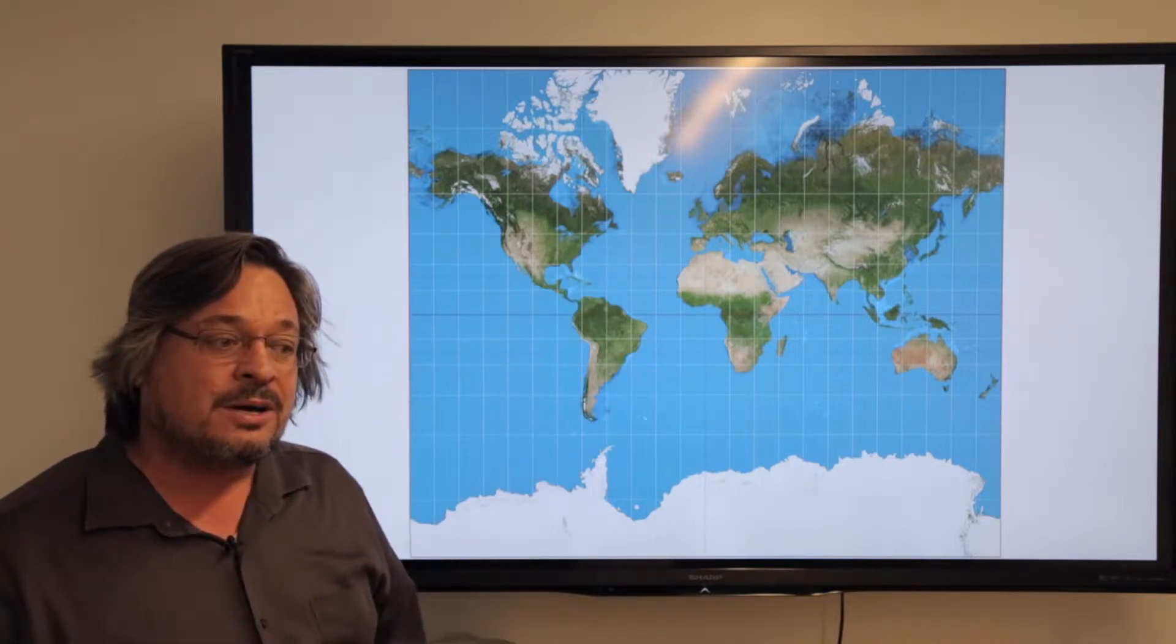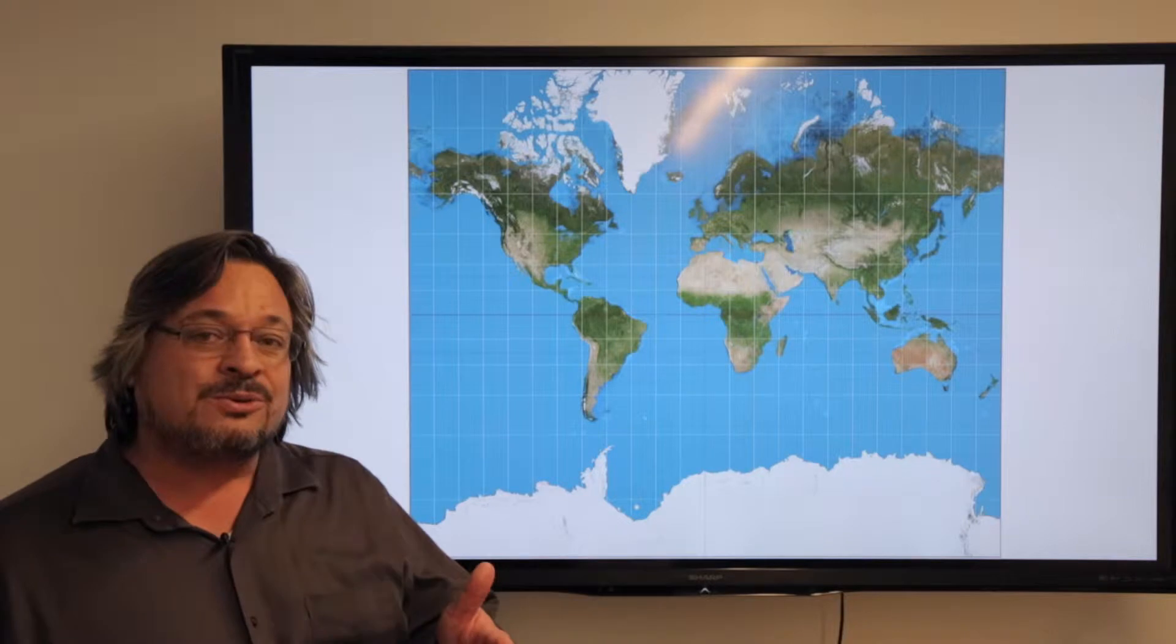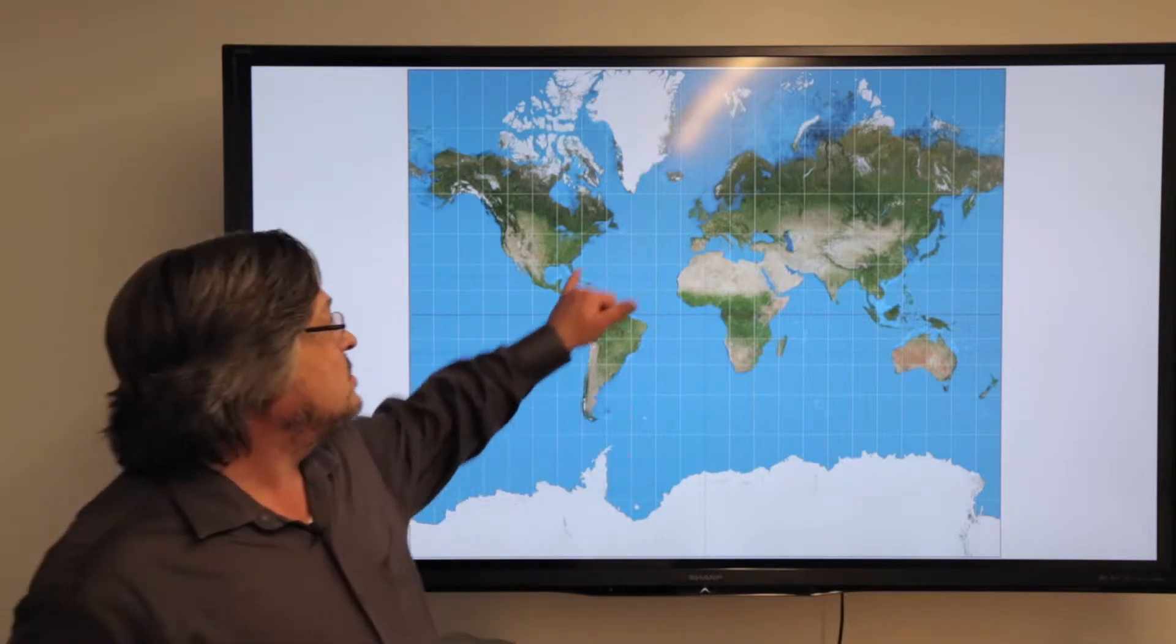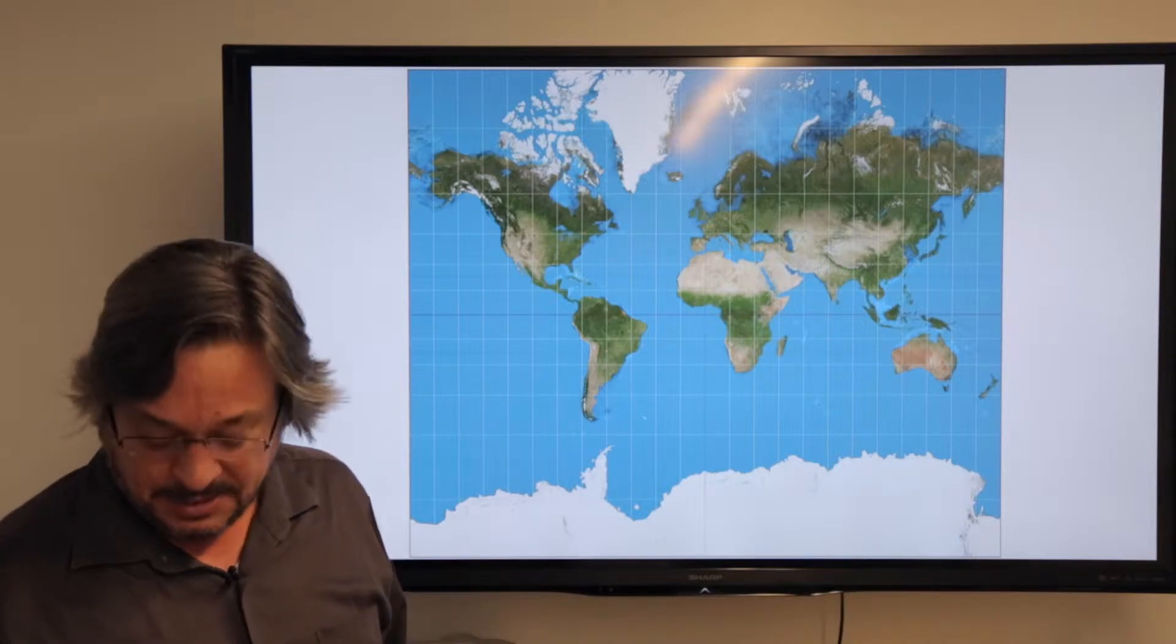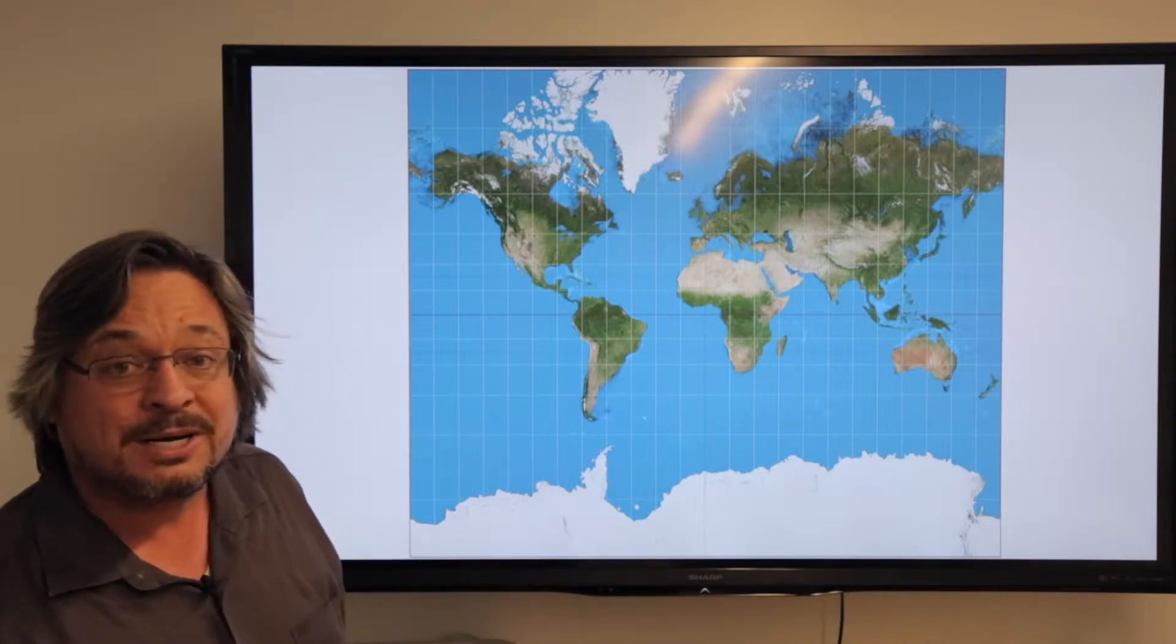It's interesting that Mercator has been reused. People complain about its huge amount of distortion, but it's the underlying foundation for Google Maps. If you zoom all the way out on Google Maps, you can spot it.